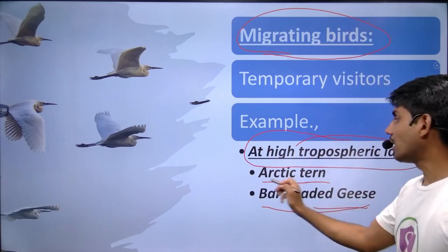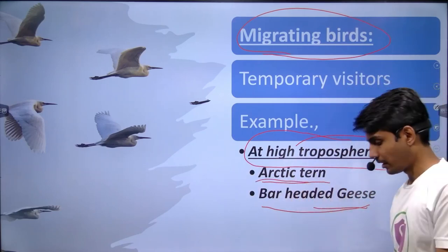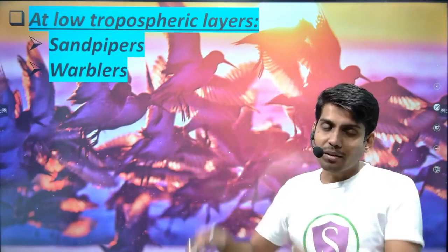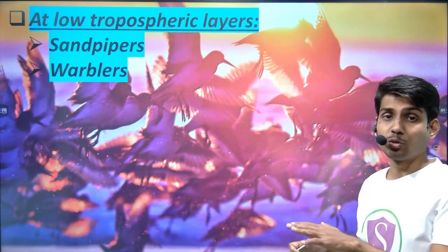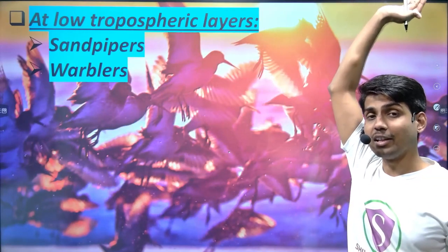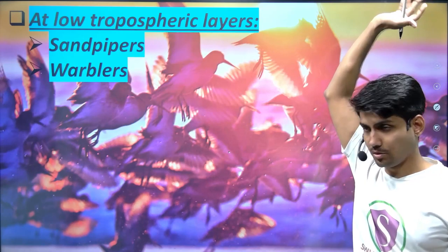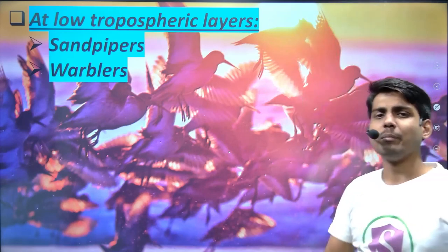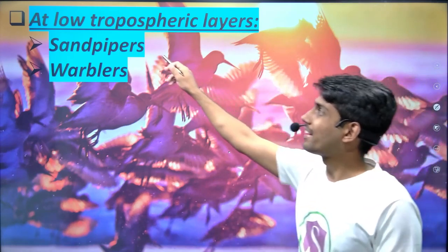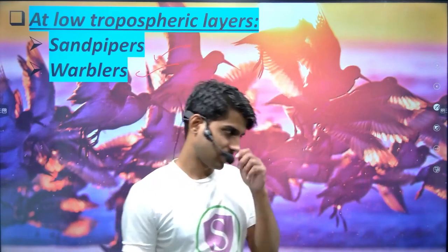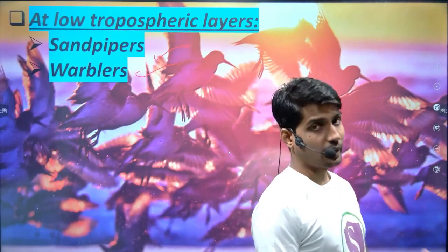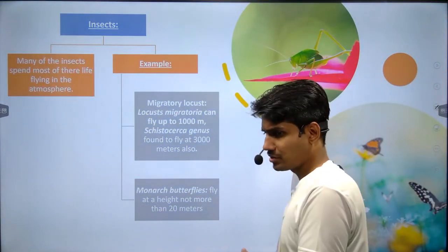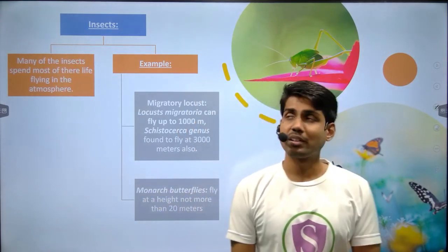Other migrating birds fly at lower heights — like 500 meters, 400 meters, or 1000 meters. Examples include sandpipers and warblers. So while bar-headed geese and Arctic terns fly at extreme high tropospheric heights, these other birds migrate at much lower atmospheric levels.